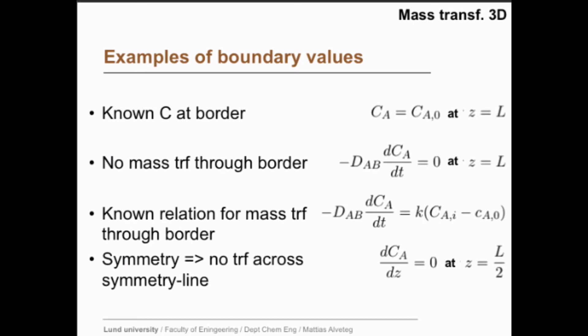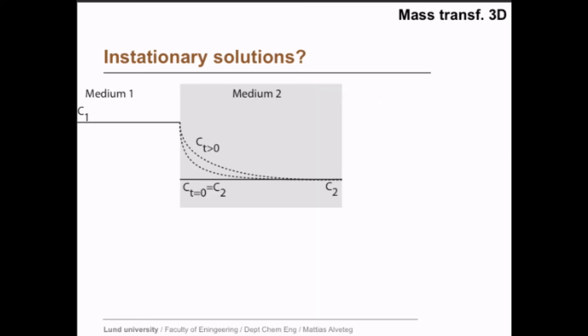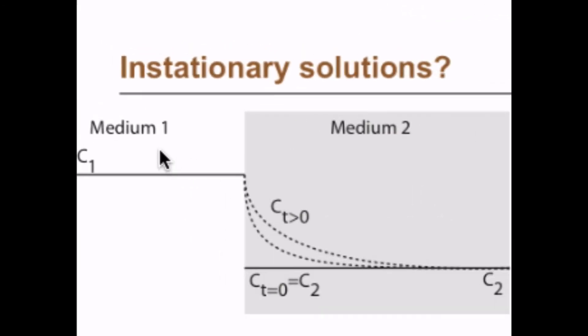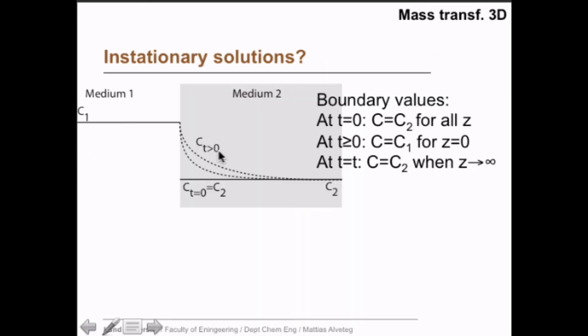Even if we know boundary values, usually the 3D mass balance is not solvable analytically. But there are exceptions, and this is one exception, which is basically the penetration theory. We have a medium here and another medium here, and at time equals zero, we have a constant concentration in medium 2. It's simply this concentration down here. And at time t, we still have the concentration c2 far away from the boundary here. So this is actually the penetration theory.